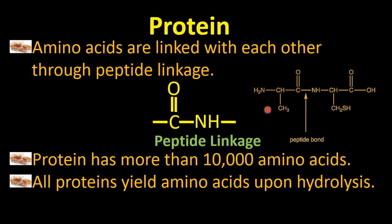Amino acids have two functional groups: one is the amine group (H2N) and the second is the carboxylic acid group (–COOH). One amino acid will give the OH group, and the other amino acid will give H from the amine group. In this way, water is removed and a new bond is formed between the two amino acids, which is the peptide bond.